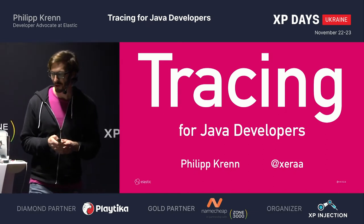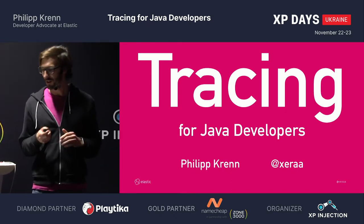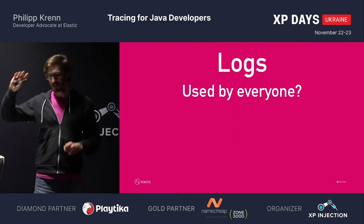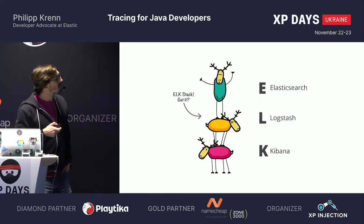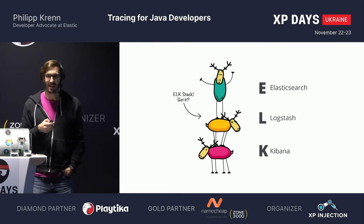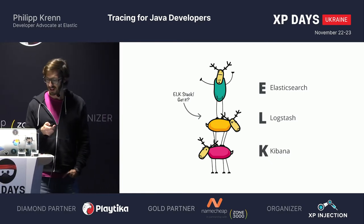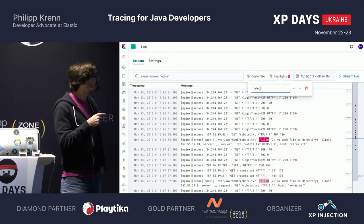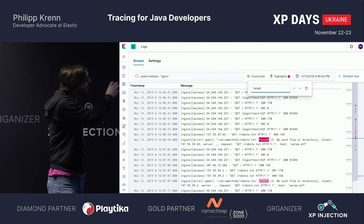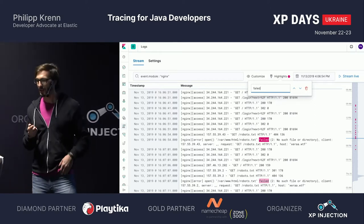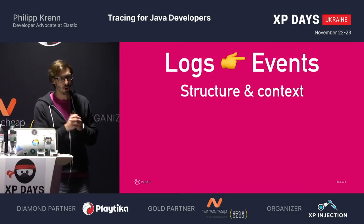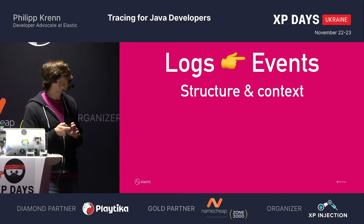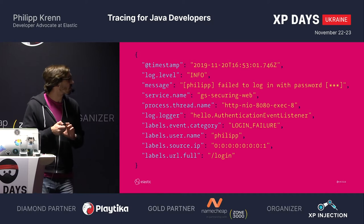Let's start with a bit more context. I assume that pretty much everybody is logging, right? Everybody is doing some logs. And probably you might have heard or used or seen this one — the infamous ELK stack. The end result might look something like this: you can filter down on results and then you can search for whatever failed. Something failed in here, and that's working well.